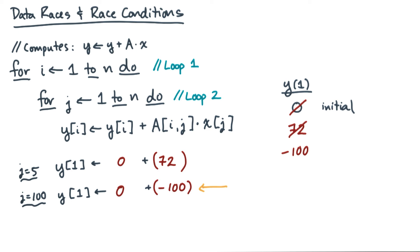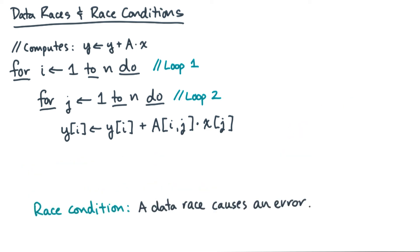Now a data race that leads to an error is called a race condition. So when you're designing parallel algorithms, you need to be careful to avoid race conditions. As a heuristic, it's often helpful to avoid data races as well. But an important point is that a data race does not always lead to a race condition. You'll see some examples of that throughout the course.